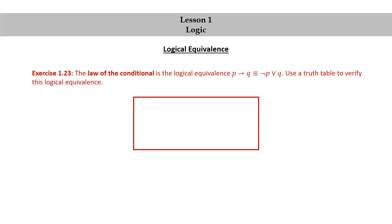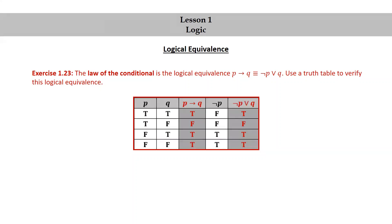Hopefully you had a chance to write out a truth table yourself. Here is my truth table. Notice that since there are two propositional variables, p and q, we have four truth assignments: true-true, true-false, false-true, and false-false. The next column, p implies q, we get from the truth table for the implication: true, false, true, true.